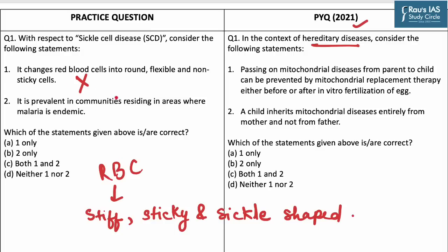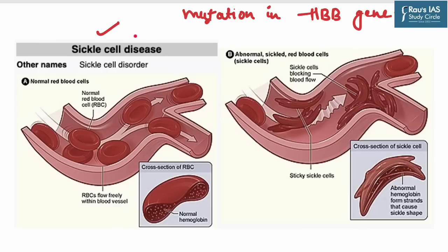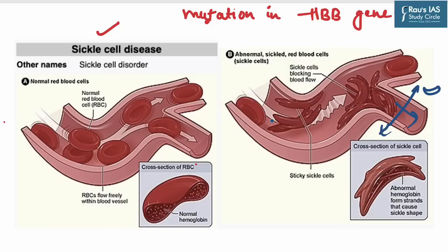The second statement is: it is prevalent in communities residing in areas where malaria is endemic. This is a correct statement. Sickle cell disease is a genetic blood disorder caused by a mutation in the hemoglobin beta gene. Because of this disease, normal RBCs which are round in shape are converted into sickle-shaped ones, creating obstructions that block blood flow. The lifespan of sickle cell RBCs is shorter, depriving the body of oxygen, potentially causing chronic anemia, pain, fatigue, acute chest syndrome, and stroke.